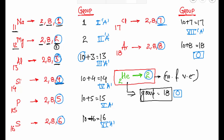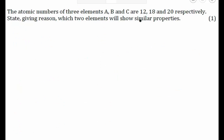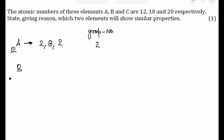Now the question is very simple. Element A has atomic number 12, so its electronic configuration is 2, 8, 2 — valence electron is 2, so group number is 2. Element B has atomic number 18, so its electronic configuration is 2, 8, 8. Since the number of valence electrons is greater than 2, its group number is 8 plus 10, that is group 18.